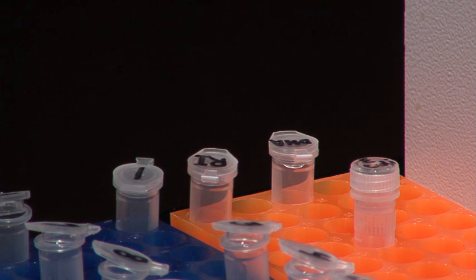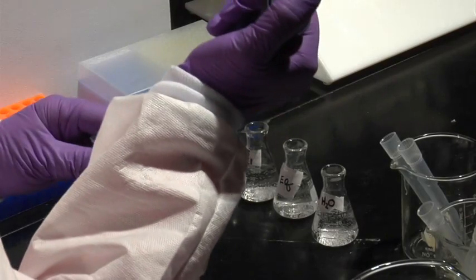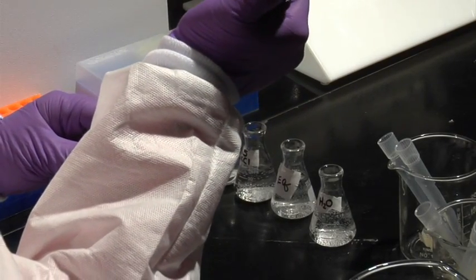Label nine micro test tubes, one through eight, and one control tube. Pipet 30 microliters of qualified water into each tube. Add five microliters of buffer and five microliters of DNA.